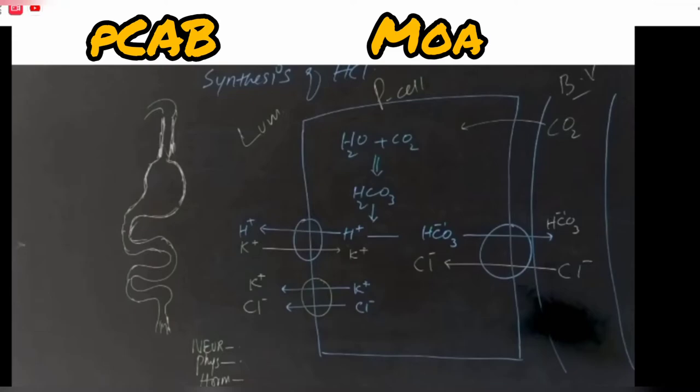There will be no more exchange of ions. In the lumen, we were supposed to have hydrochloric acid because of this pump – HCl was supposed to be synthesized. Now this pump, by means of the PKB, is blocked. When PKB is indicated and blocks this pump, there will be no more production of hydrochloric acid.